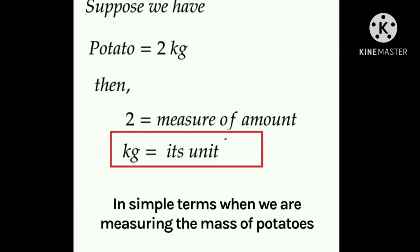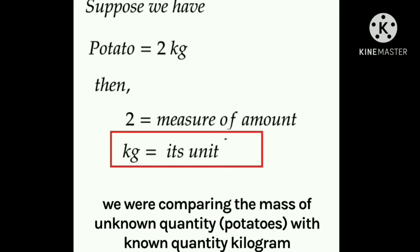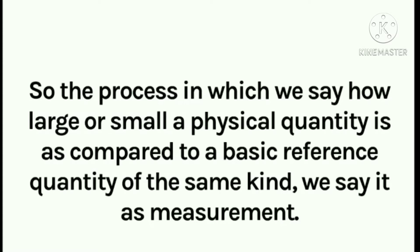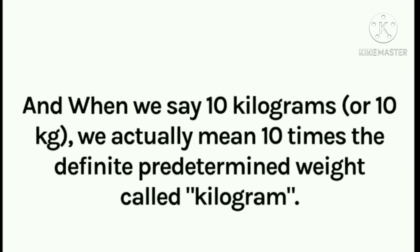Measurement is defined as the comparison of an unknown quantity with a known, pre-selected value of the same quantity. And the unit is that pre-defined or pre-selected value. Suppose we have potatoes of 2 kg — then 2 is the measure of amount and kg is its unit. When we say 10 kg, we actually mean 10 times the definite predetermined weight called kilogram.